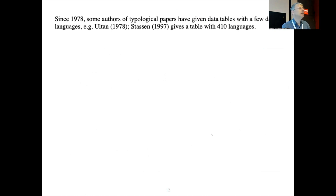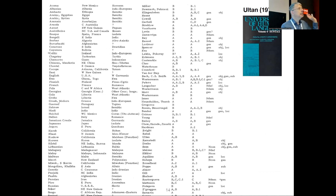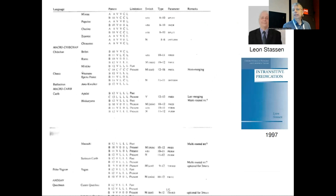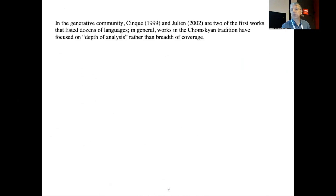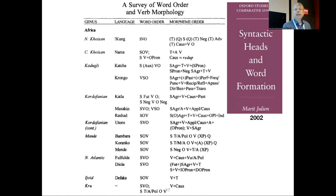Since 1978, we actually had more and more data tables. Nichols in the 1992 book has data tables. In the Universals of Human Language coming out of the Greenberg Stanford project, we have quite a few data tables — no maps, but tables. Leon Sassen in his 1997 book had data tables on up to 400 languages. And the generative community started doing this too — Cinque 1999 and Julian 2002 list dozens of languages with data tables, but not really reusable.